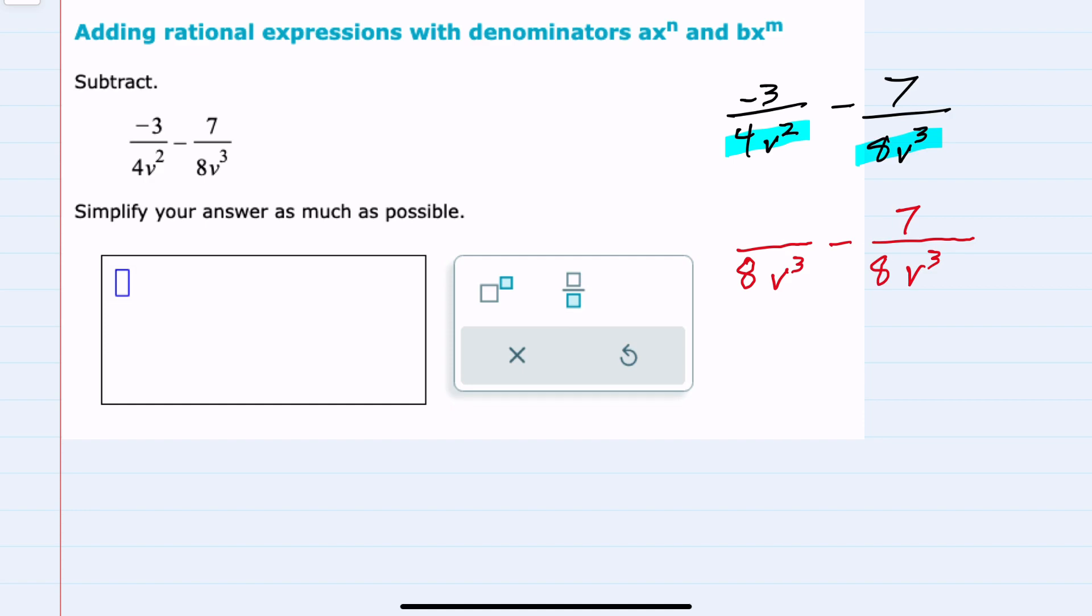On the left hand side though, for the 4, we would want to multiply the denominator by 2, which means we would need to multiply the numerator by 2. And then we would also need another v in the denominator. So we would need to multiply the numerator by v as well.